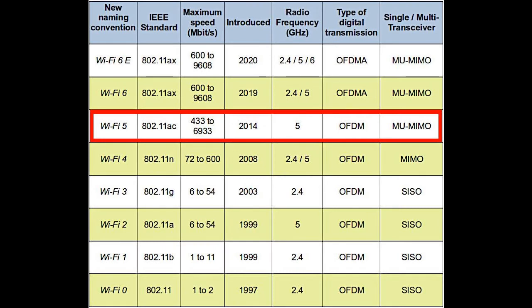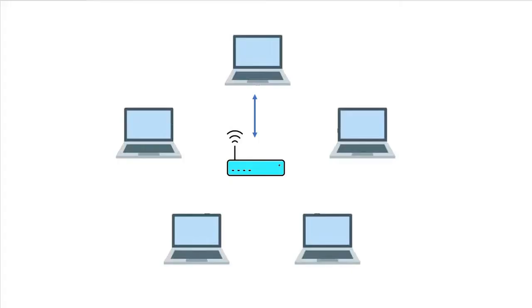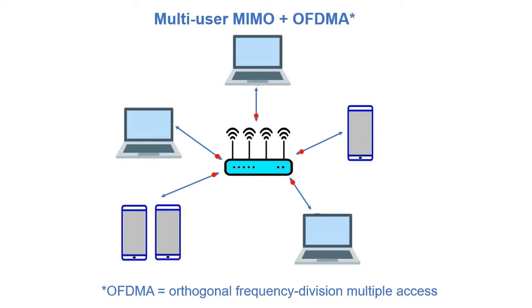Besides improved data transfer speed, Wi-Fi 5 also brought Multi-User Multiple Input Multiple Output, abbreviated MU-MIMO. All older Wi-Fi standards were designed to serve one device at a time. For example, with five computers connected to a Wi-Fi router, the router would send and receive data from the first computer for a few microseconds, then switch to the second, then the third, and so on. With MU-MIMO, for the first time Wi-Fi routers were able to simultaneously deliver data to different clients like computers, smartphones, and IoT devices. Data transfer speed between a specific computer and a MIMO Wi-Fi router also depends on whether the computer's network card supports MIMO technology.